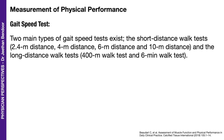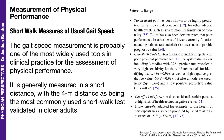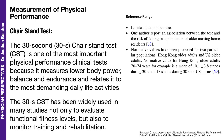For the measurement of physical performance, a gait speed test is done with two main types: long distance and short distance. The short walk measures about four meters and is one of the most commonly used short walk tests validated for older adults, with reference ranges recommended by the group. The 30-second chair stand test is one of the most important physical performance clinical tests because it measures low body power, balance, and endurance — in Hong Kong about 10.1 stands per 30 seconds, and in the US 13 stands.